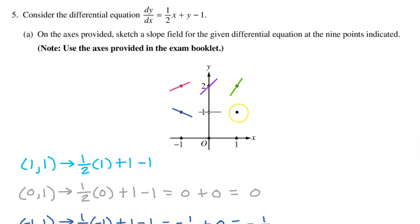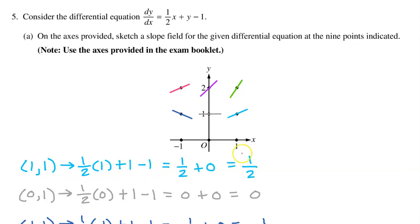At the point (1, 1), we have one-half times 1 plus 1 minus 1. This equals one-half, so draw an increasing slope but less than a 45-degree angle.